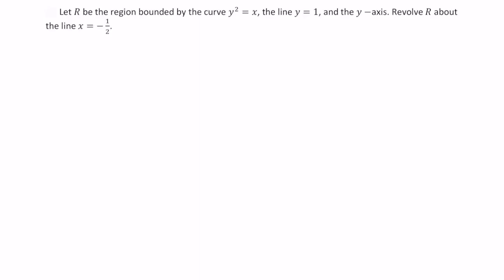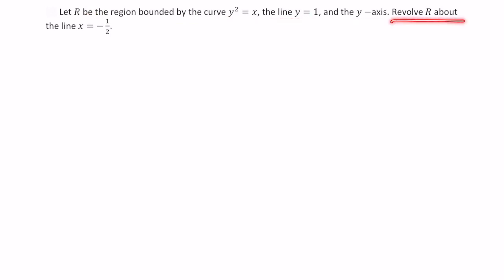Welcome. In this video, I'm going to demonstrate how to use the method of cylindrical shells to find the volume of a solid of revolution. In this case, R is the region bounded by the curve y squared equals x, the line y equals 1, and the y-axis. And we will be revolving that about the line x equals negative 1 half.